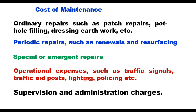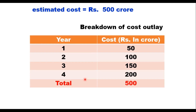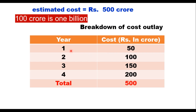In highway construction and operation, the time period is generally large, so it is necessary to distribute costs year-wise. For example, if the cost of a project is 500 crores (5 billion rupees) to be spent over four years, it may be broken down as: 50 crores in year one, 100 crores in year two, 150 crores in year three, and 200 crores in year four — summing to 500 crores.